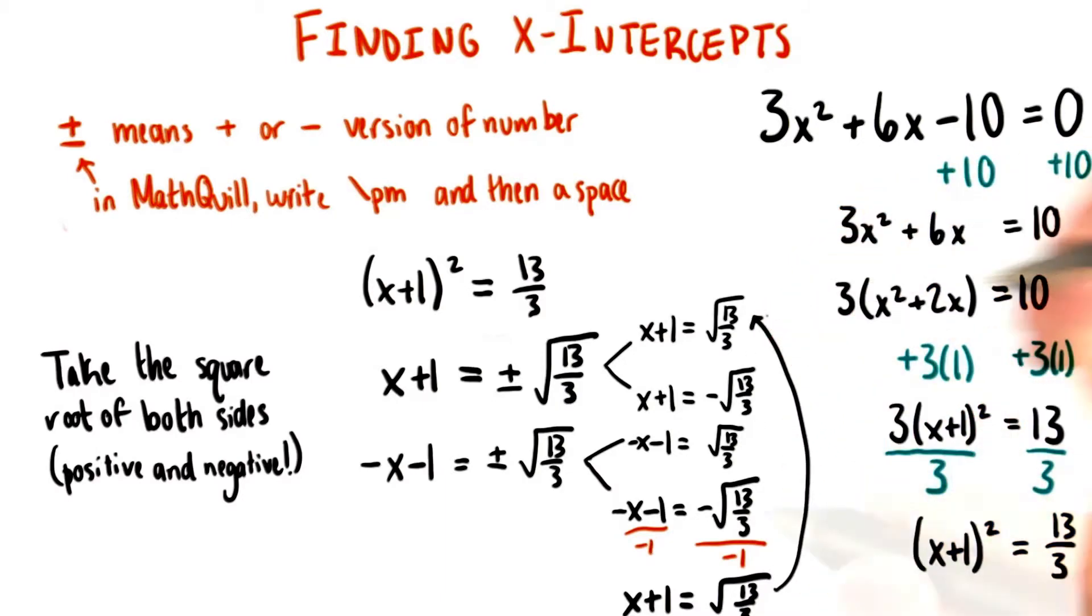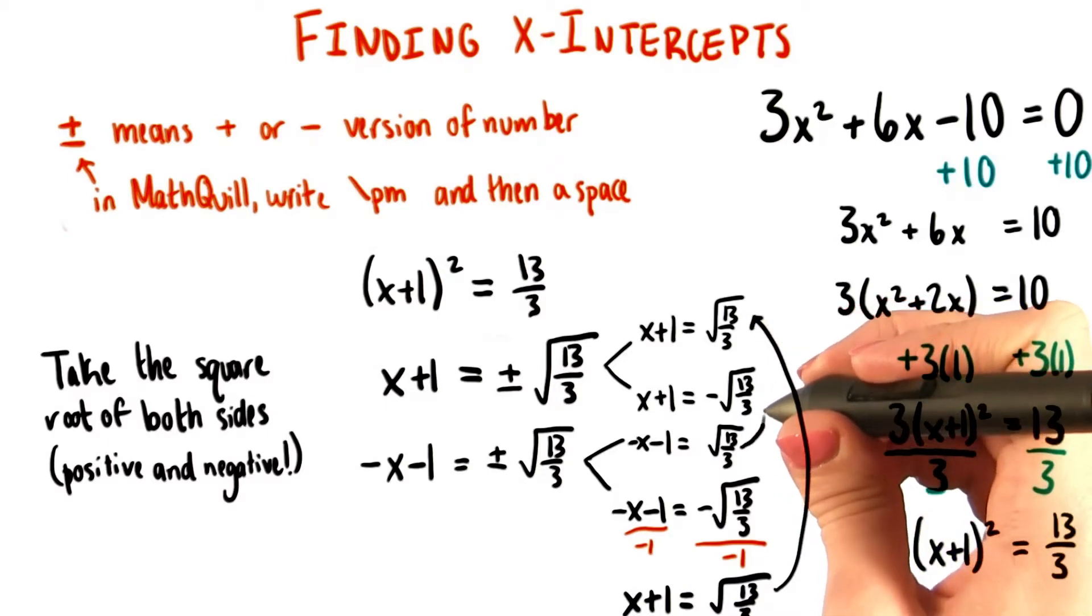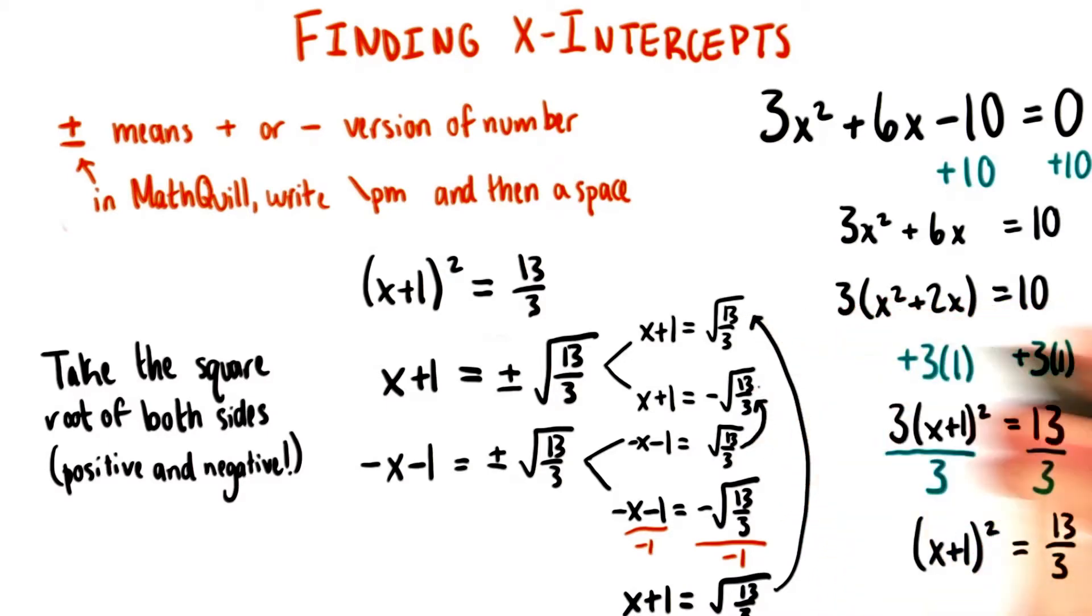Which is just this equation up here. That means that one of our equations in the second pair is the same as an equation in the first pair. Now, if we did the same thing for these two equations, the two we haven't touched on yet, we'd find that they are equivalent as well.